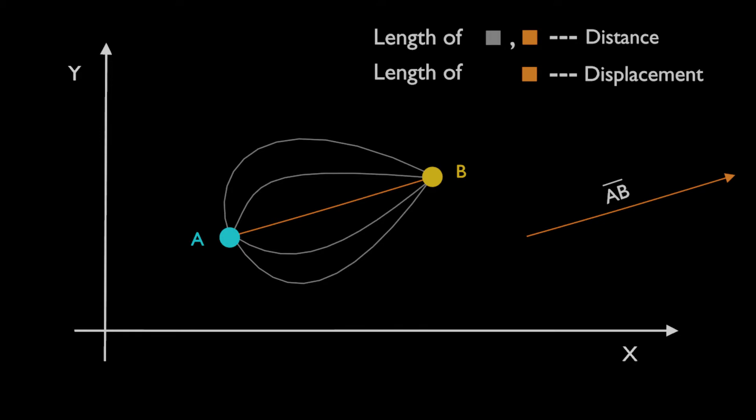Be careful with the naming convention here. The vector is AB, as the direction is from A to B.